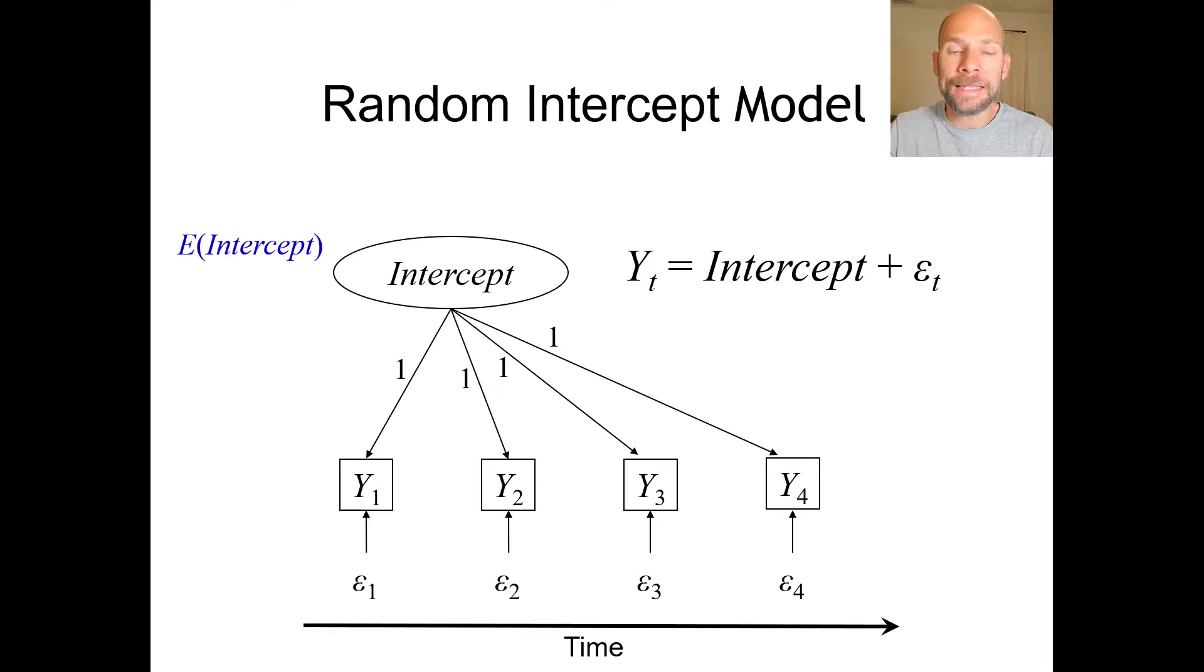Now, what parameters are estimated in the model? One parameter is the mean of the intercept factor, so we can look at average intelligence scores, for example, at the latent level. Also, the variance of the intercept factor is estimated to quantify inter-individual differences in the true scores.